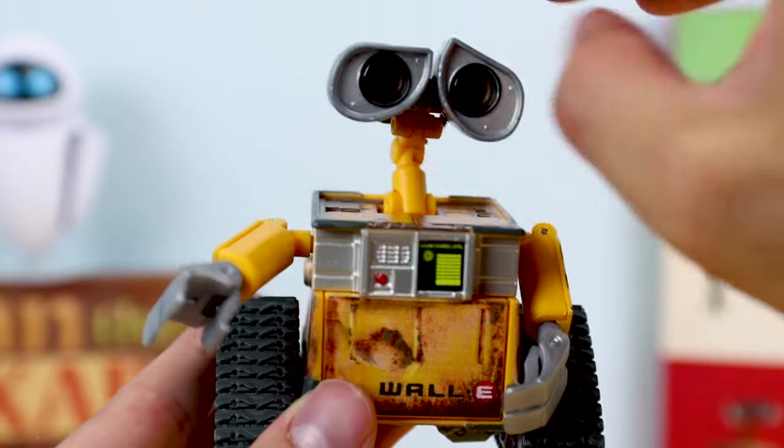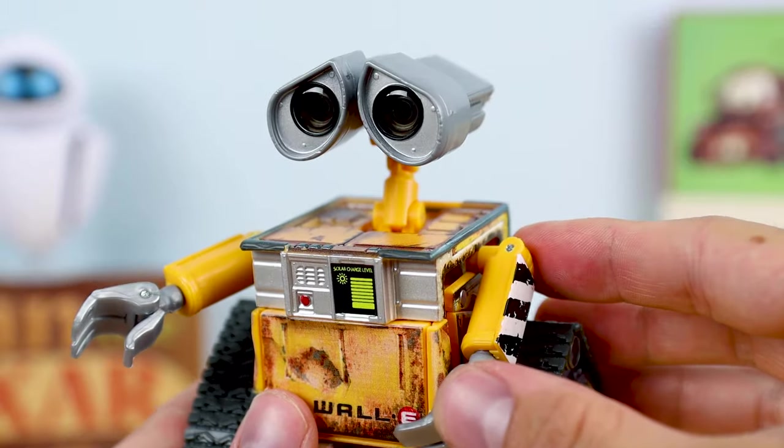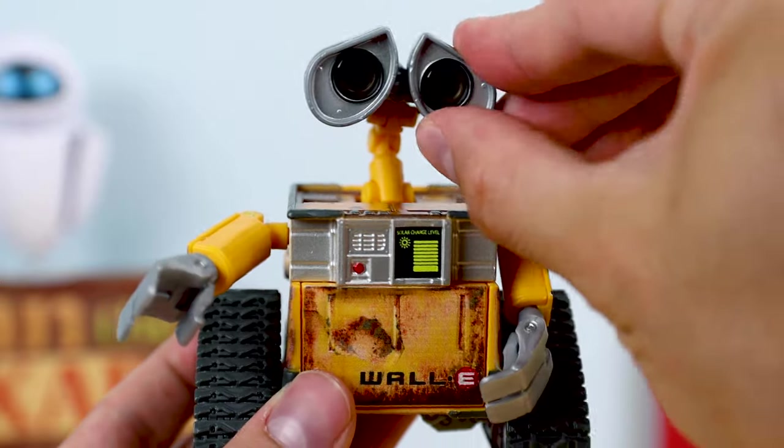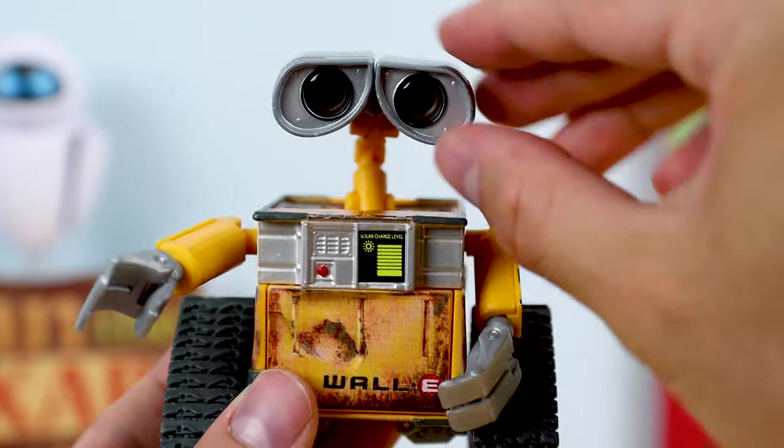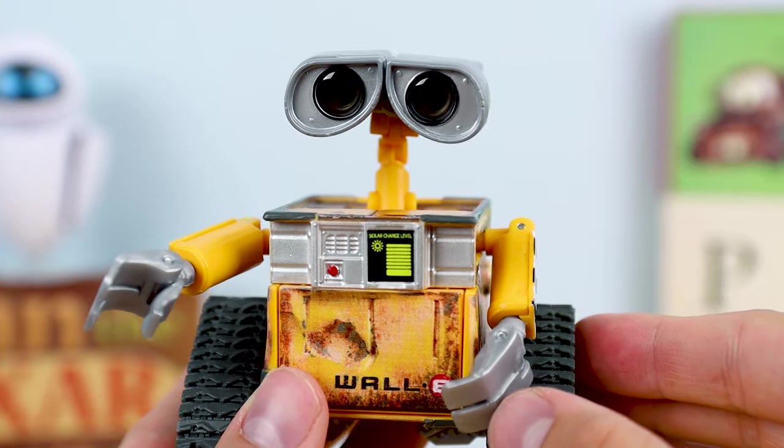And just another example here of how you can mess with the eyes to give him different expressions. We have what I'd consider more of the traditional Wally look here, and this is kind of more of the serious factory reset look.